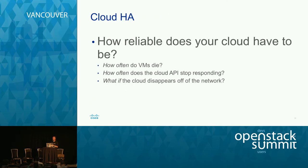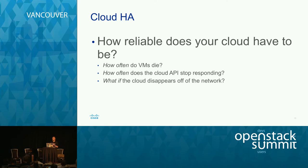How reliable does your cloud have to be? The question is: how do you specify the reliability you need in order to deliver your service? How often do VMs die — you can ask that and say it's too frequent. How often does the cloud API stop responding and how long is it out? That's an obvious question, because when VMs die, the first thing I'll do is try to run another one — and if I can't, I've got problems.